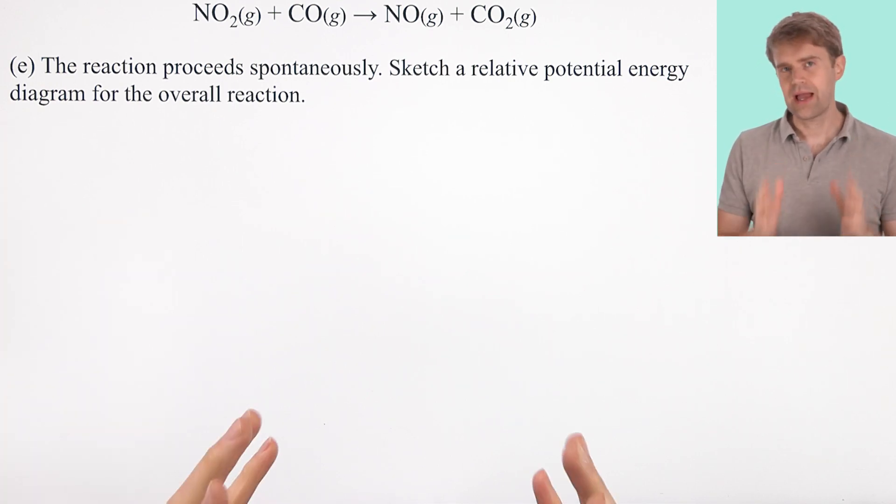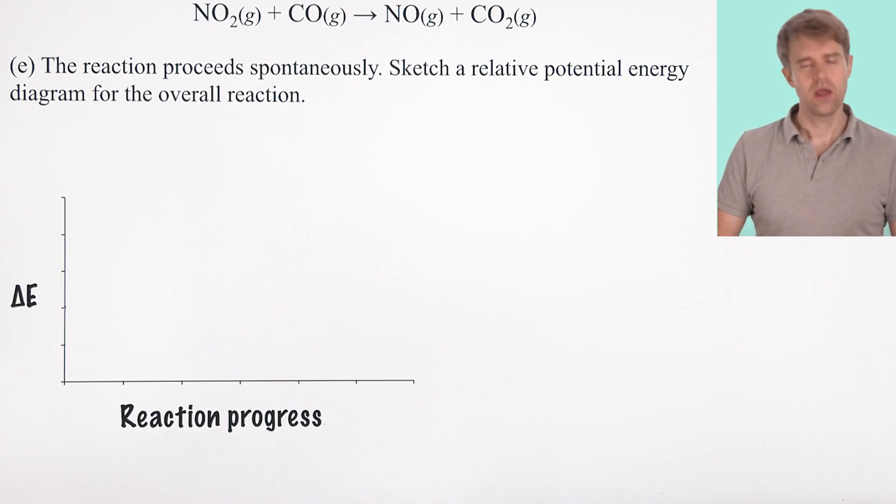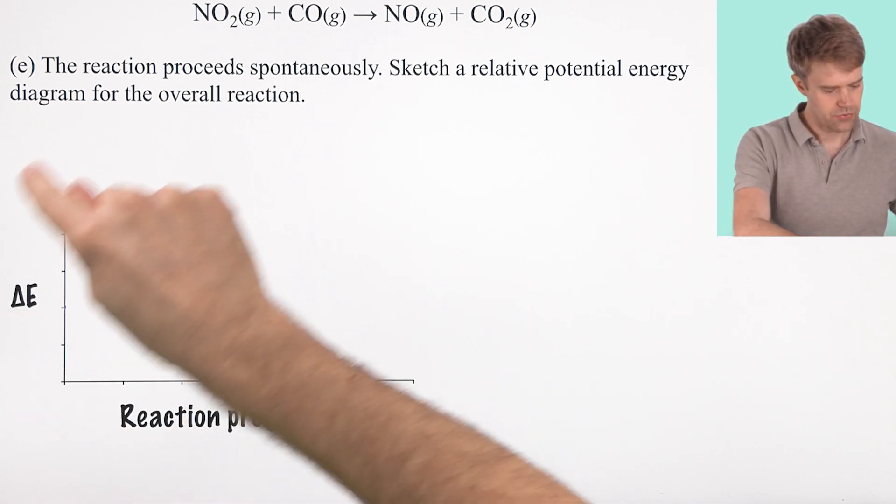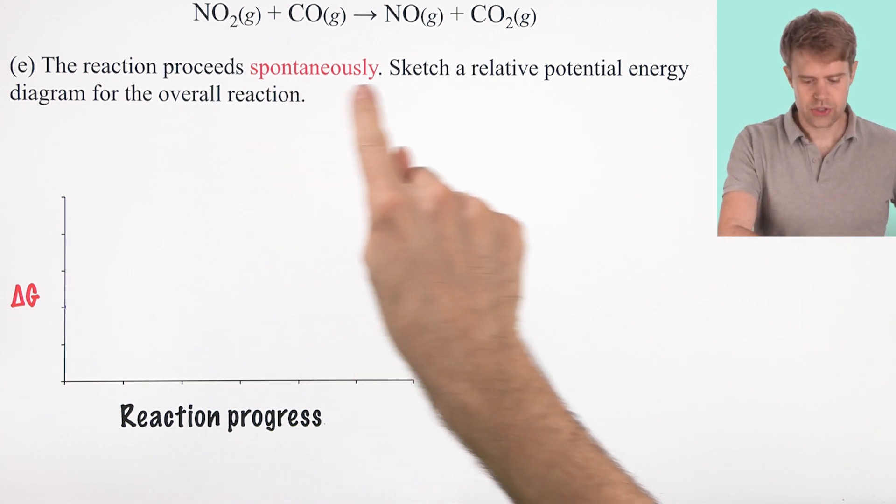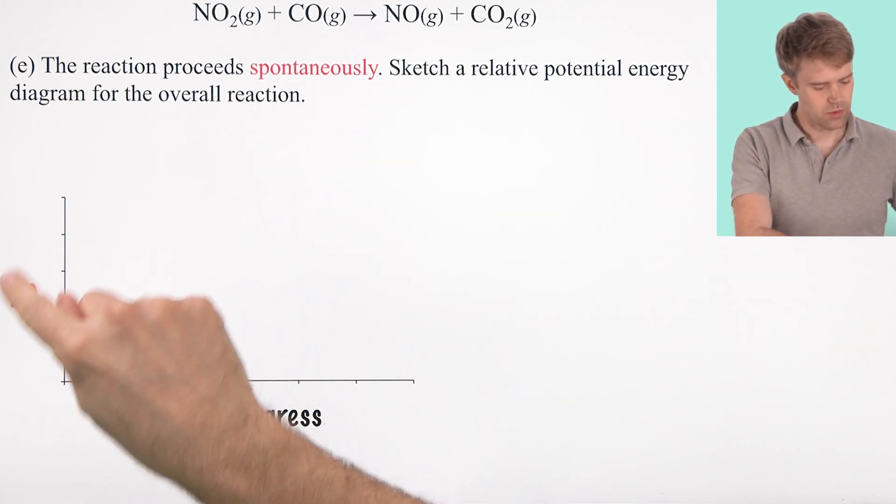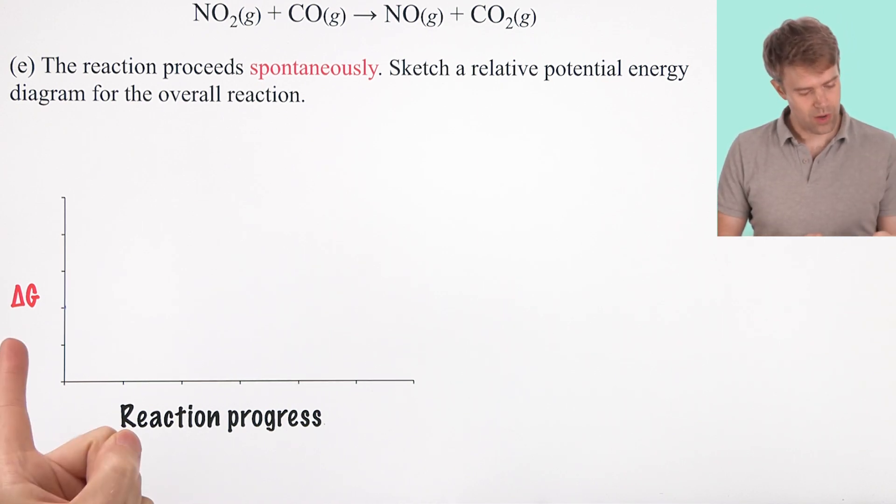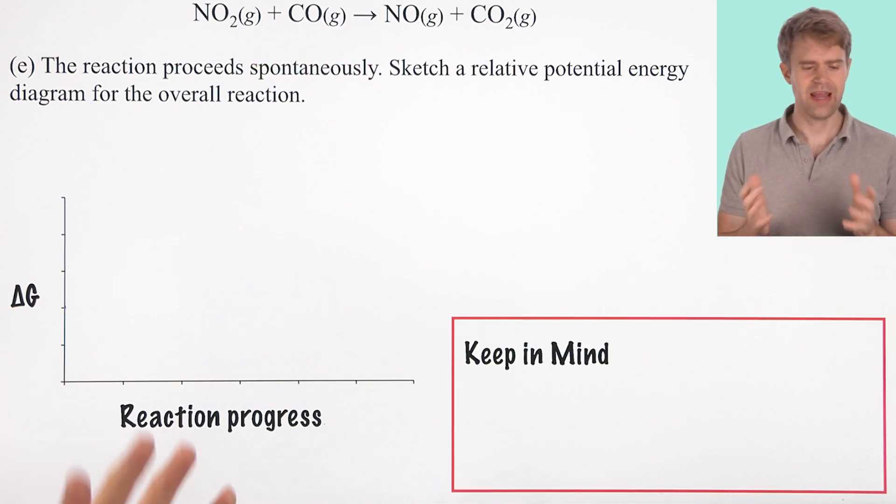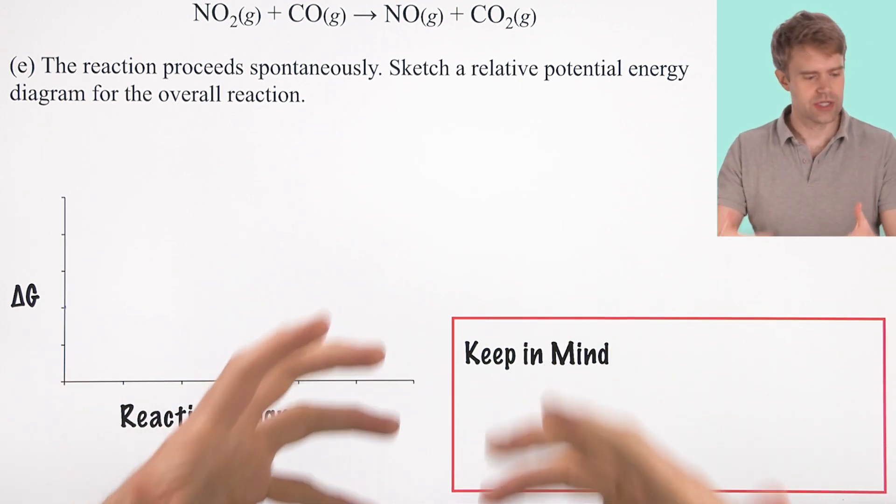Part E reads, the reaction proceeds spontaneously. Sketch a relative potential energy diagram for the overall reaction. A potential energy diagram is just a simple graph that charts the reaction progress on the x-axis and the energy of the reaction on the y-axis. Now here, the problem specifically tells you that the reaction is spontaneous. So, that means that we're working with Gibbs free energy, or delta G. So, let's be even more specific, and we can label the y-axis delta G. Now these kind of graphs are pretty qualitative. The AP exam just wants to make sure that you understand the basic concepts.